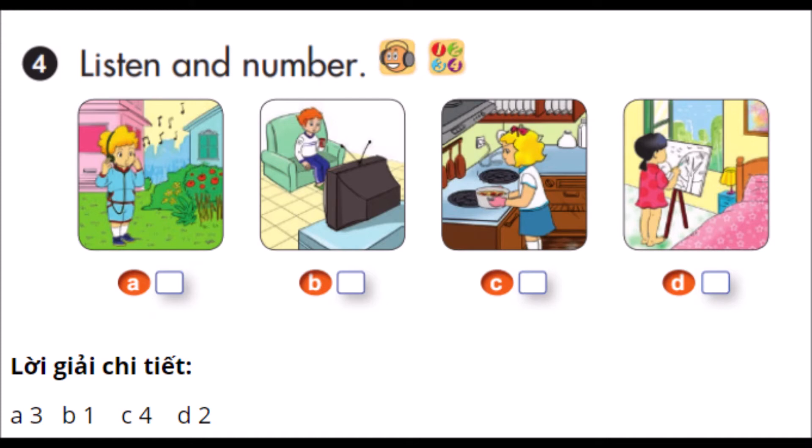1. Where's Tony? He's in the living room. What's he doing? He's watching TV.